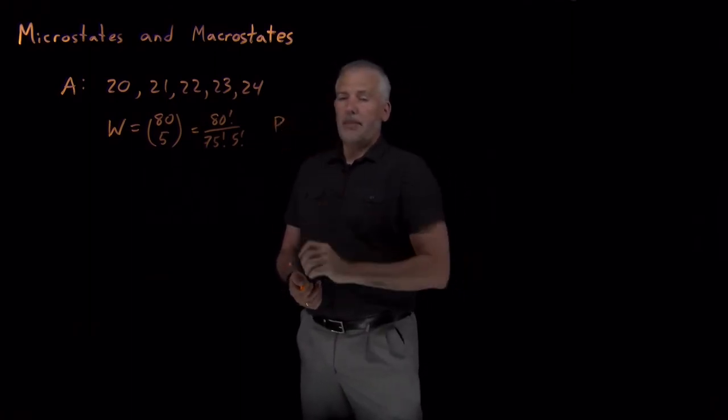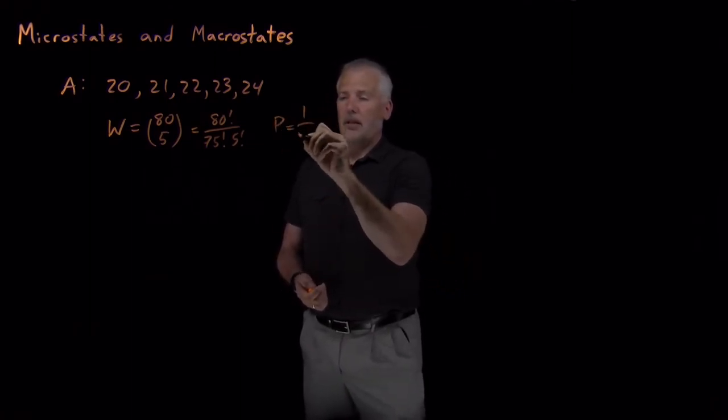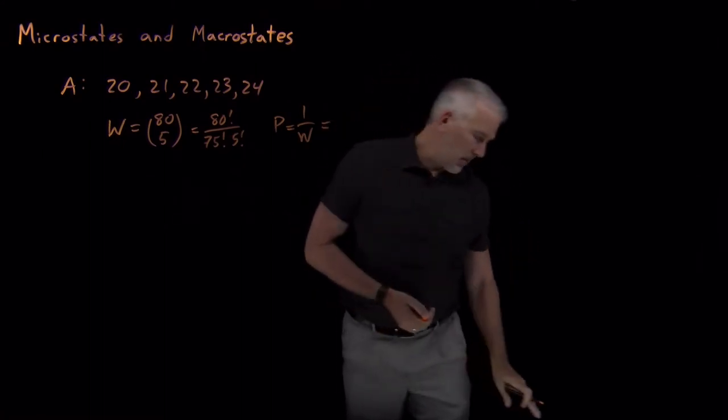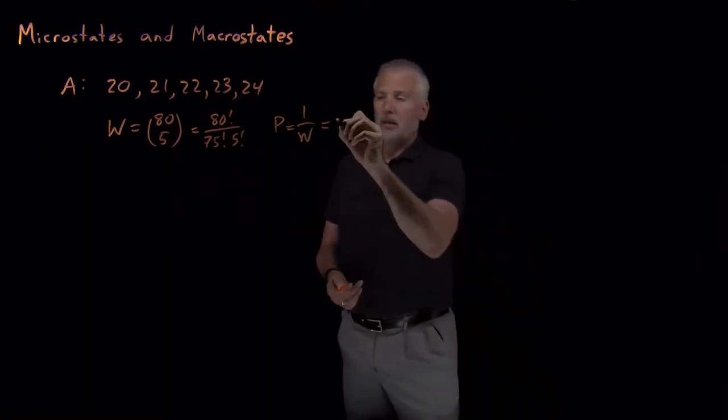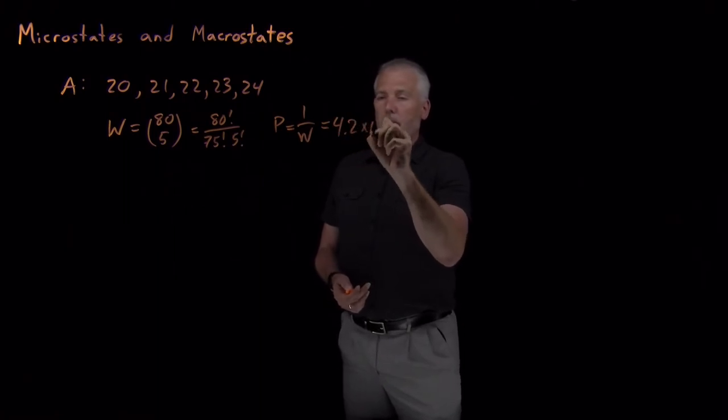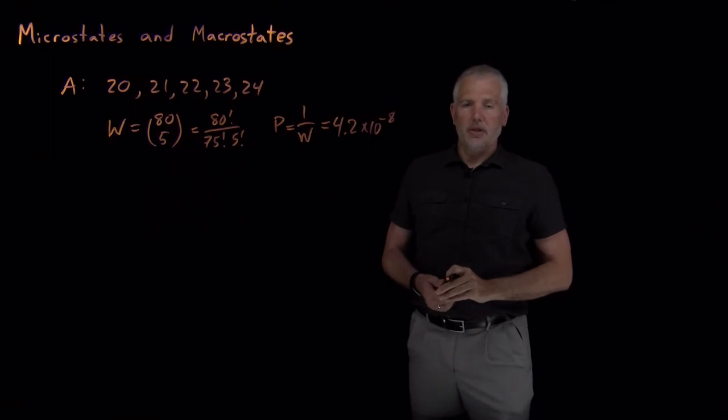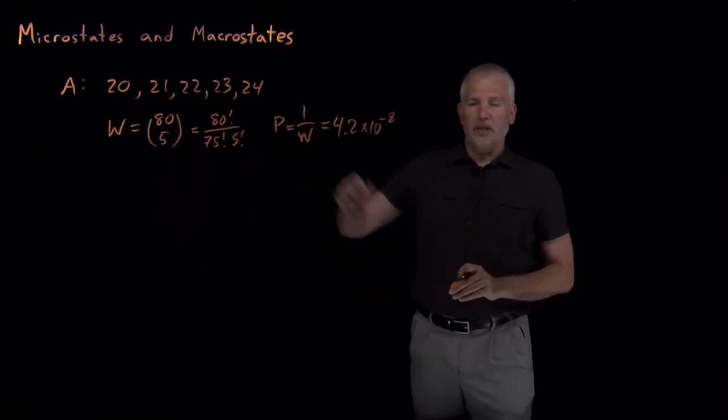So the probability of that happening, one over 24 million, that's a number that turns out to be one in 24 million or so, or about 4 times 10 to the minus 8. So you can say, you can watch the lottery 24 million times, and you'd only see something like that happen once. That is genuinely incredible.